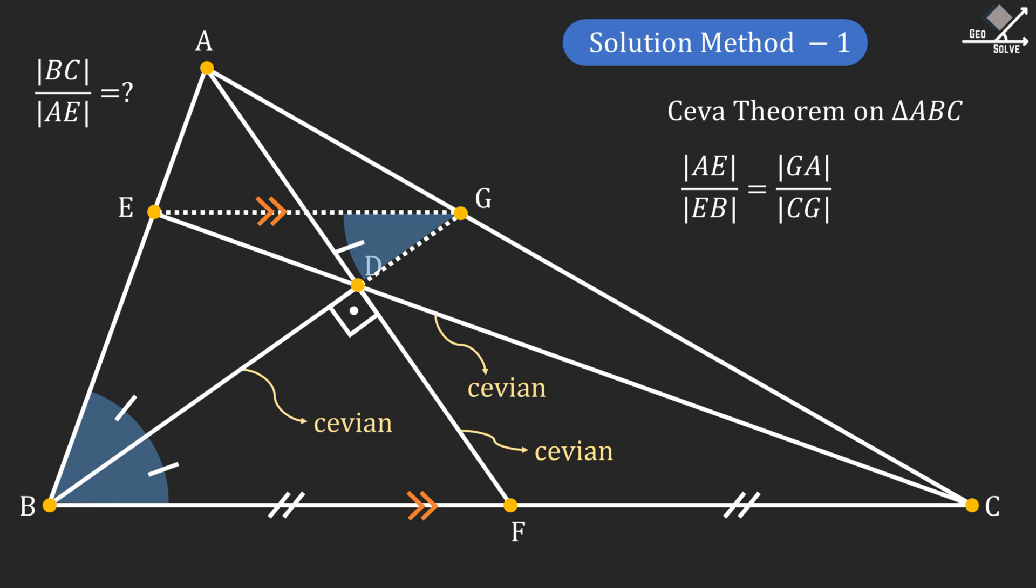Now let's call the length of the line segment EG as Y. Since triangle BEG is an isosceles triangle, the length of the line segment EB will also be Y. And let's call the length of the line segment AE as X.